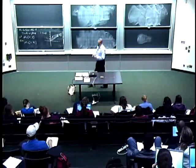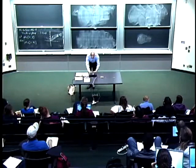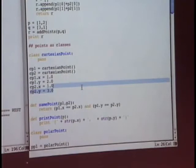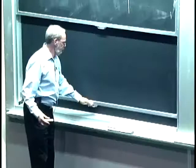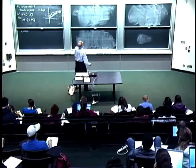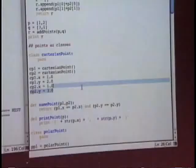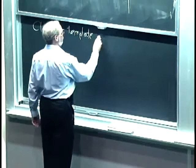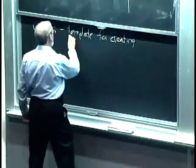So we've got a problem. We want to build an abstract data type, but we'd like to know what kind of object it is and what functions actually belong to it. I'm going to go back to the idea of a class. I'm going to define a class — a template for creating instances of an object.